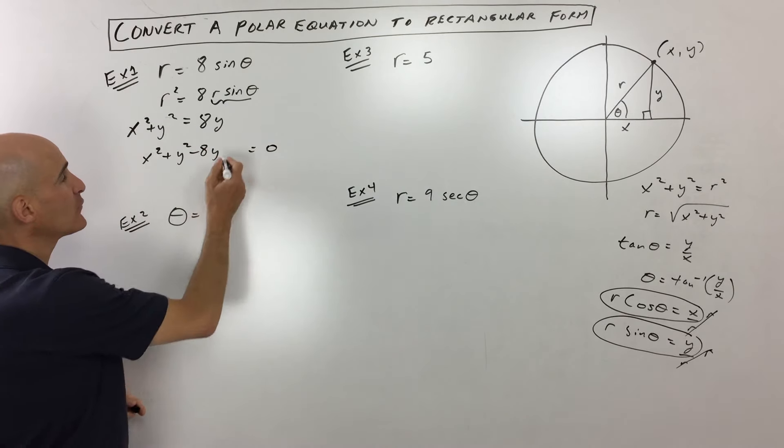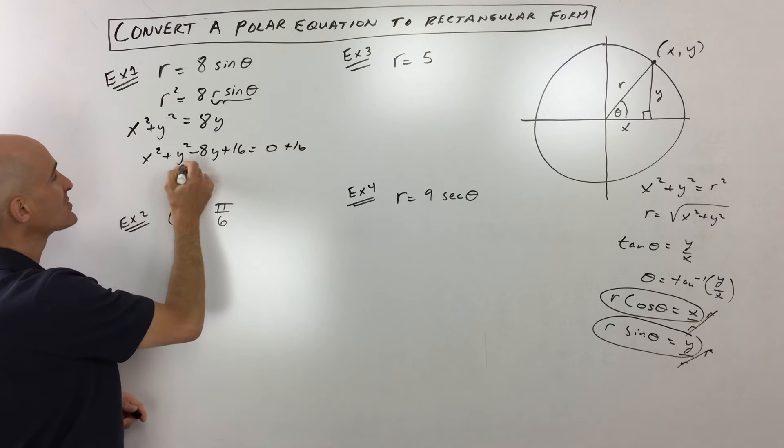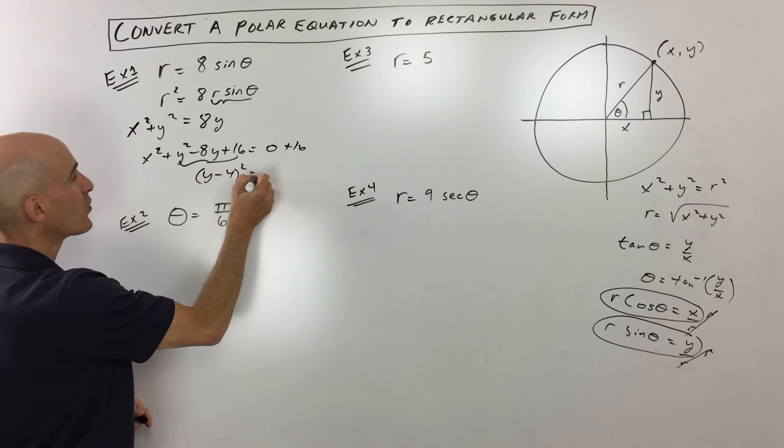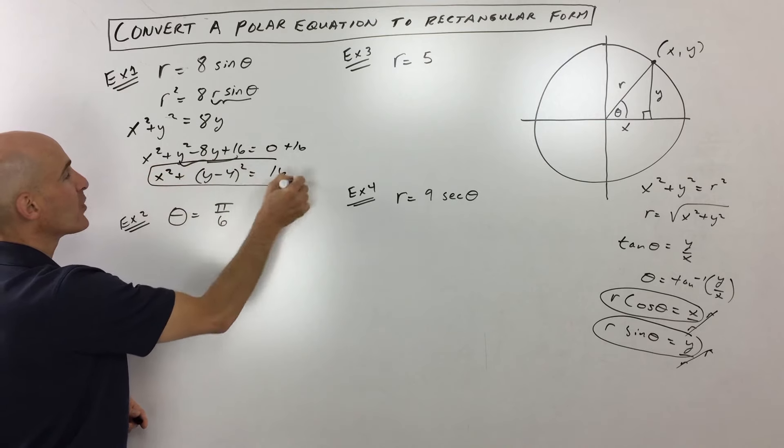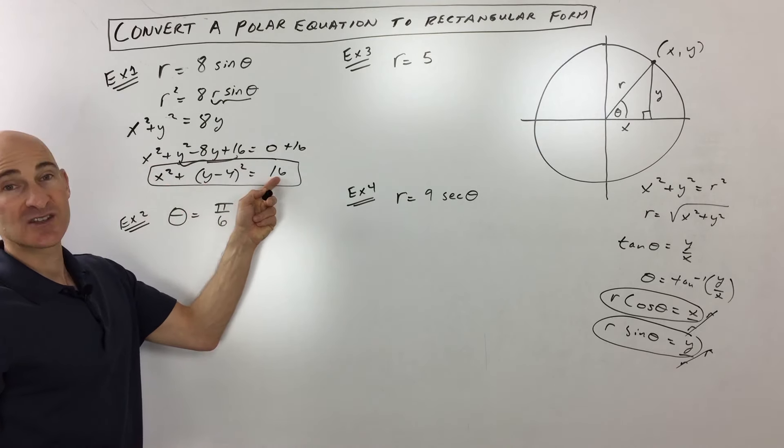So we're going to take half of negative eight, which is negative four. Negative four squared is 16. You want to add that 16 to both sides. Now when you factor this, you can see you're getting y minus four squared. And now it's in the standard form of the equation of a circle. The center's at zero comma four, and the radius is four.